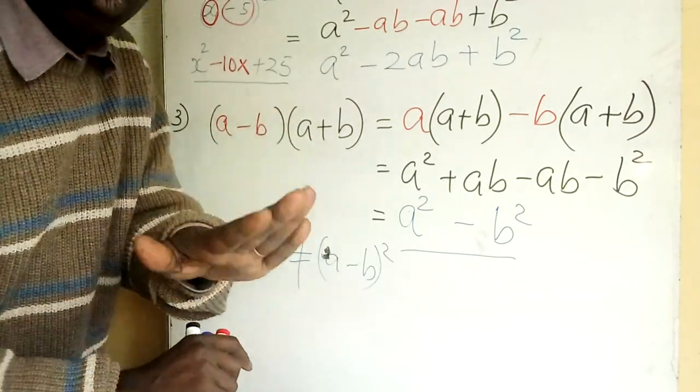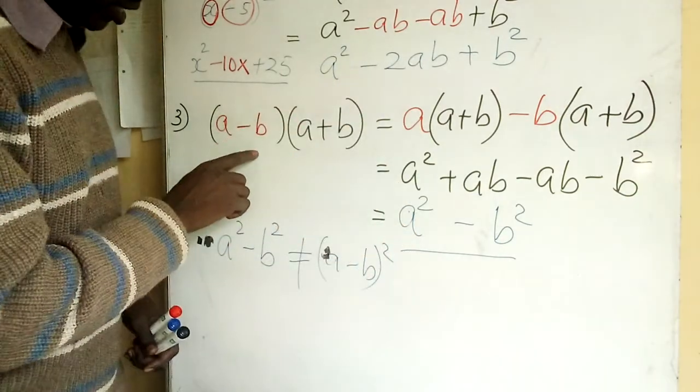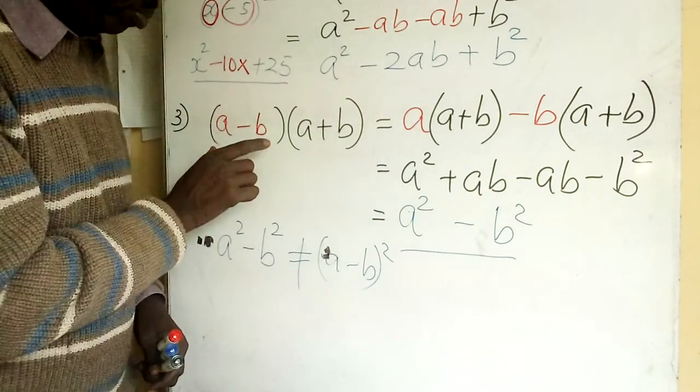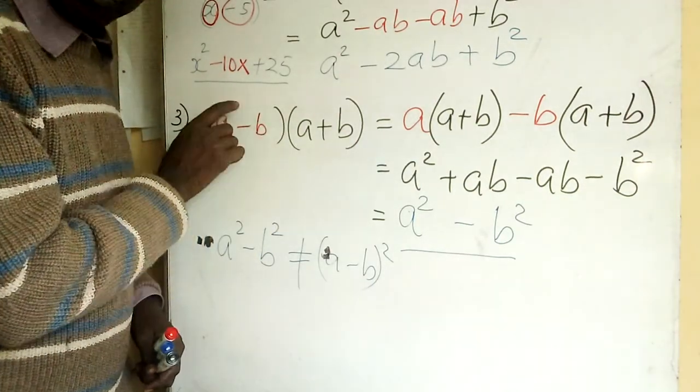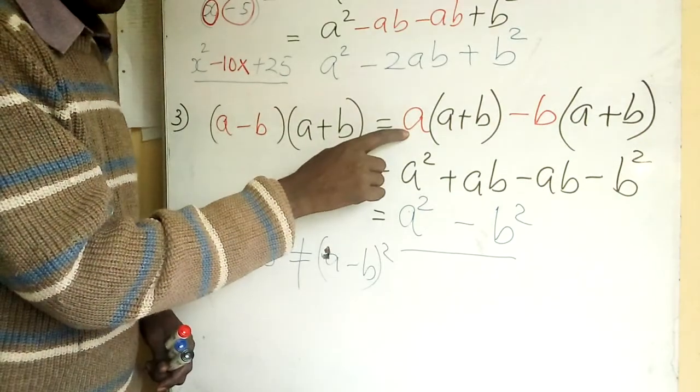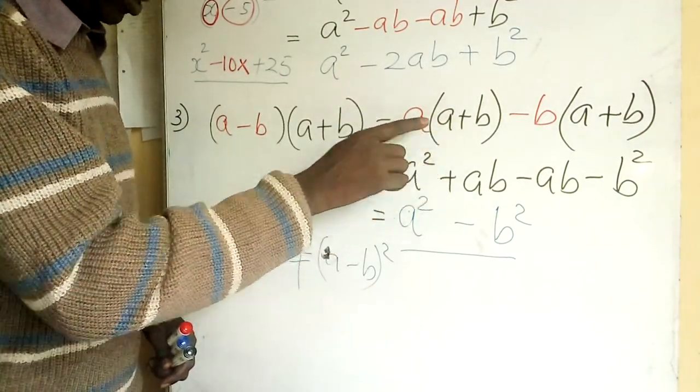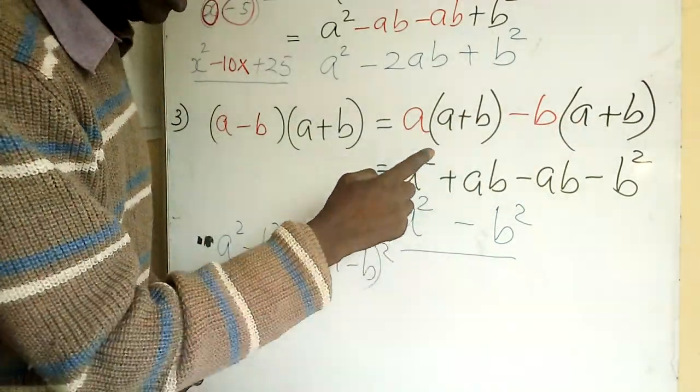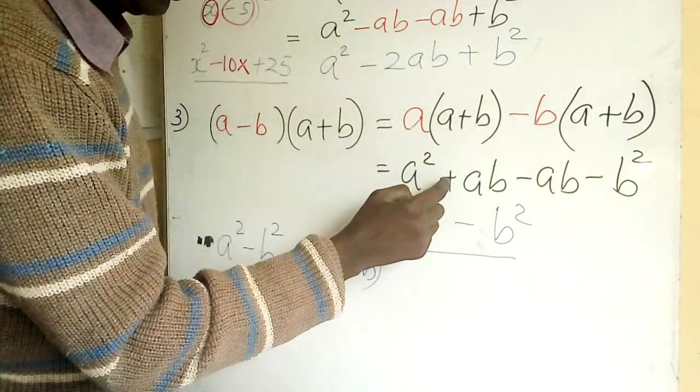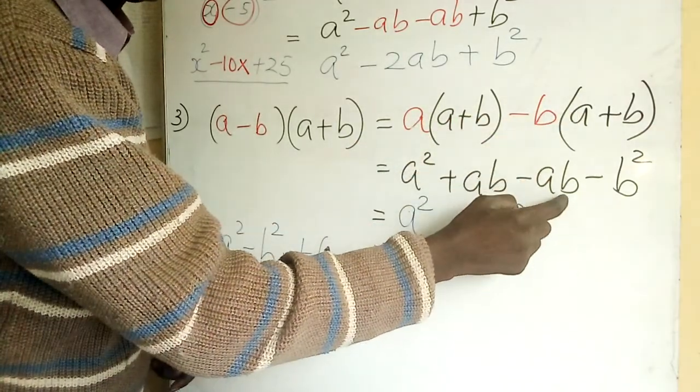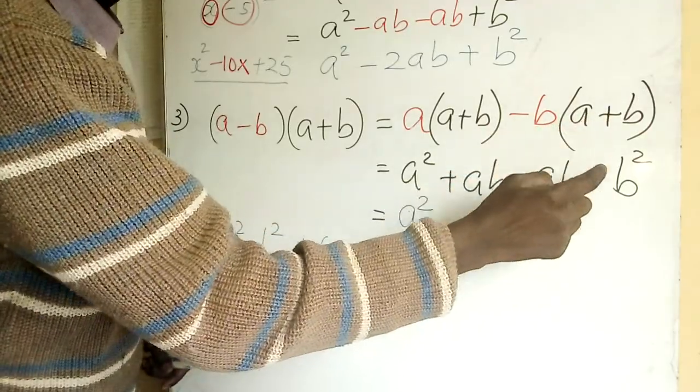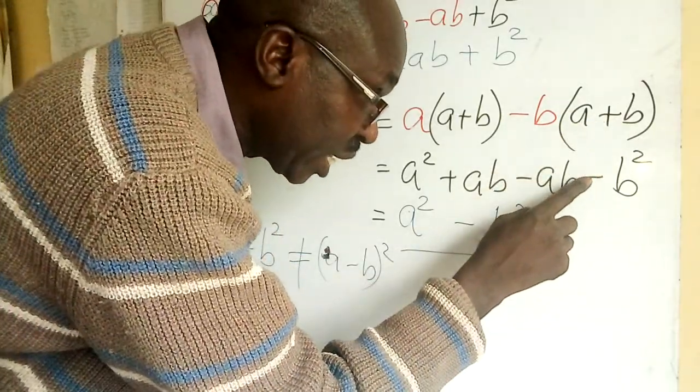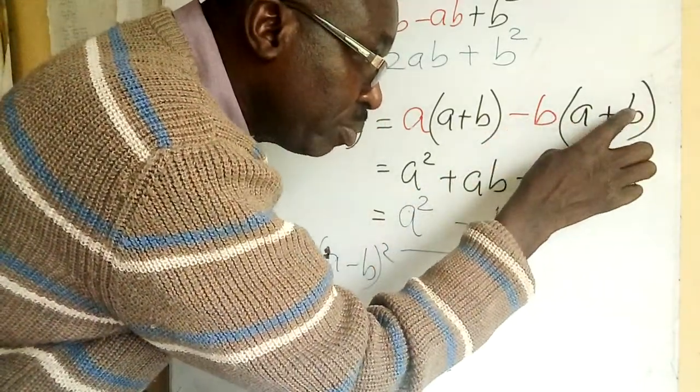Third example I take (a-b) but this side I take (a+b), or vice versa you can interchange them, it doesn't matter. So what do we do? The first one in blue according to you as a student, blue times black. Blue break it: a first, give it blue black. Then what remains here is -b, give it black. Then open: a and a: a², a and b: ab. Here negative ab. And then negative and positive: negative b². Negative and positive is negative, then b times b: b².